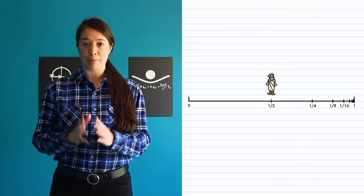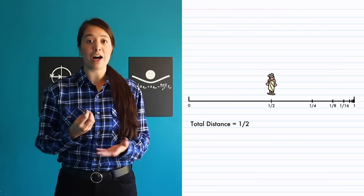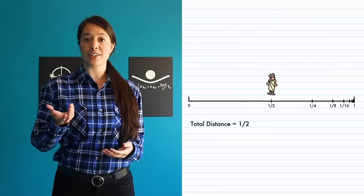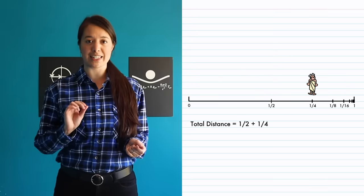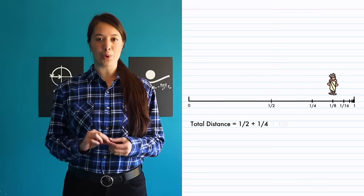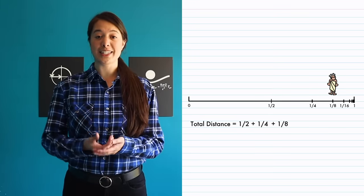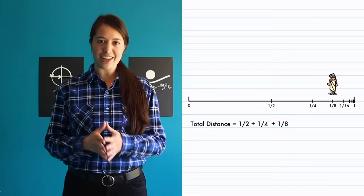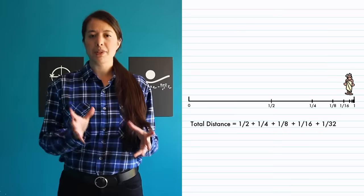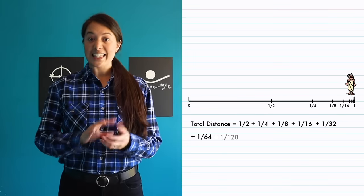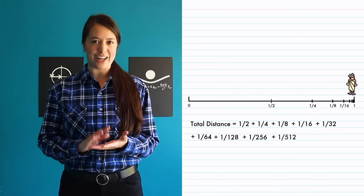At the first halfway point, your total distance is equal to half a stade. Then once you reach the second halfway point, your total distance is that half plus a quarter of a stade. By the next halfway point, the pattern is clear, and we can write the total distance as a bunch of fractions added together. The numbers we're adding on keep getting smaller, but the sum never ends.